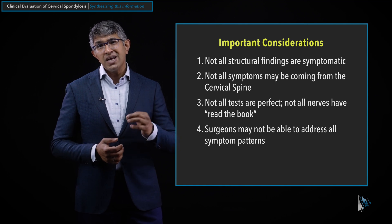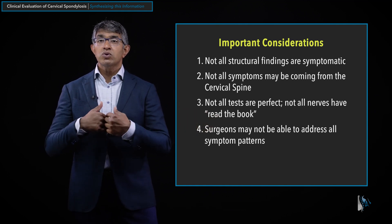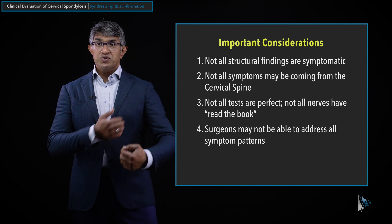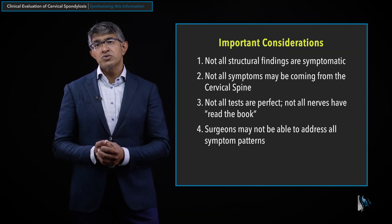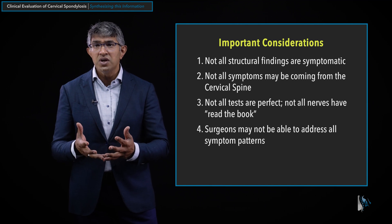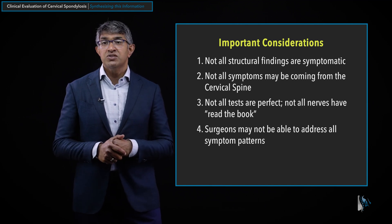Number four: surgeons may not be able to address all symptom patterns. We'll often go into surgery for a patient with both myelopathy and radiculopathy but have to establish clearly that we don't know whether the neck pain will improve — we're really there to address the arm symptoms and the balance dysfunction. It helps to go into surgery with a clear understanding of goals and to set clear expectations for the patient.